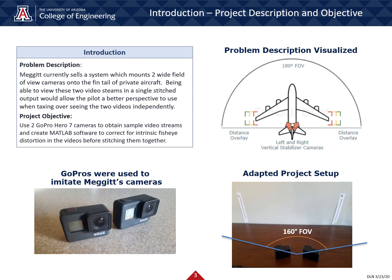To describe our project, we first need to describe what Megit does as a company and what they were looking for from our group. Megit currently sells a system which mounts two wide field of view cameras, named left and right vertical stabilizing cameras, onto the fin of the aircraft, as the diagram to the right suggests. Being able to view these two video streams in a single stitched video output rather than as two separate videos would allow the pilot a better perspective when taxiing around airports. Megit's two cameras encompass a 180 degree field of view from their positions on the fin. Our team's original objective was to create software which would take two video streams from these two cameras and stitch them together into a single wide field of view video.